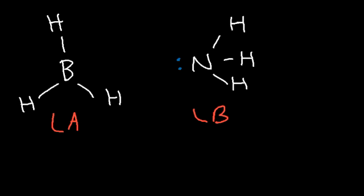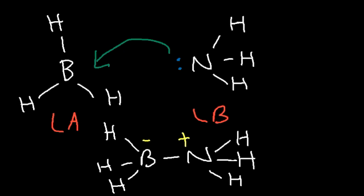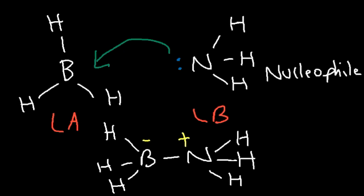This makes boron the Lewis acid and the nitrogen in ammonia the Lewis base. Nitrogen donates its lone pair to create a bond between boron and nitrogen. In the product, nitrogen with four bonds has a positive formal charge and boron with four bonds has a negative formal charge, though overall it's still neutral. The Lewis base is known as the nucleophile — electron rich — and the Lewis acid is the electrophile — electron poor, wanting electrons.